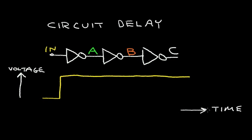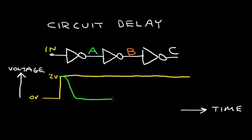Here I'm plotting time on the horizontal axis and voltage on the vertical axis. This input starts at 0 volts, and it switches high or to a logic 1 — perhaps 2 volts depending on the level of the power supply. So let's analyze what happens at node A. As the input of the first inverter switches high, the A signal will transition to a zero level and it will stay low.